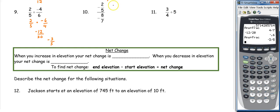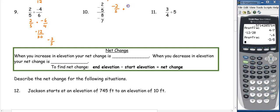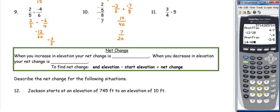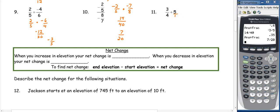Number ten is still a division problem, just written differently. Write it out: the first fraction stays — negative 2 fifths — times the reciprocal of the second: negative 7 eighths. Negative two times negative seven is fourteen over forty, and taking a two out of both gives 7 twentieths. You can verify in the calculator and get 7 twentieths. Number eleven: remember, any whole number can be written over one, so 5 becomes 5 over 1. Dividing by 5 means multiplying by 1 over 5, so 3 fourths times 1 fifth gives 3 twentieths.